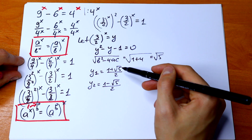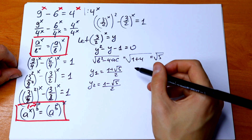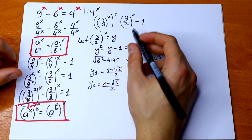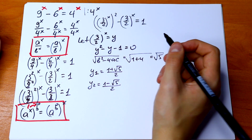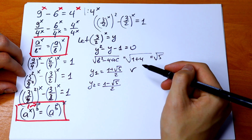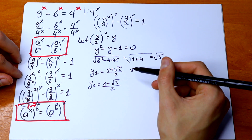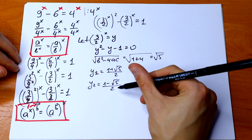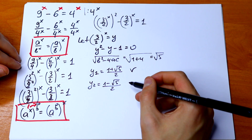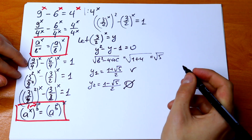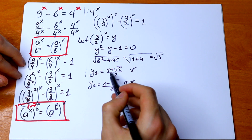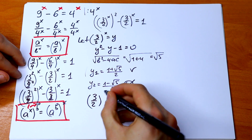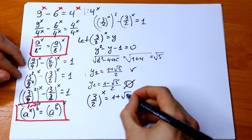But these roots cannot be negative, because from our substitution y equals (3/2)^x, this value never becomes negative. The first root (1 plus √5)/2 is positive, so it's good. The second root (1 minus √5)/2 is negative, so we reject it. Therefore, (3/2)^x equals (1 plus square root of 5) all over 2.